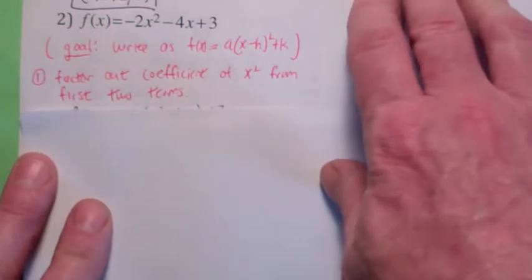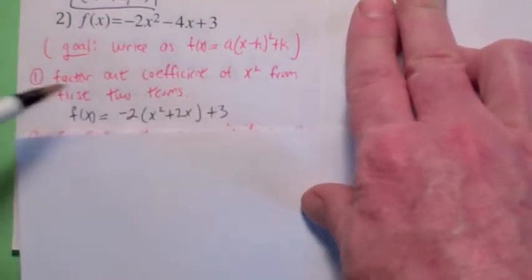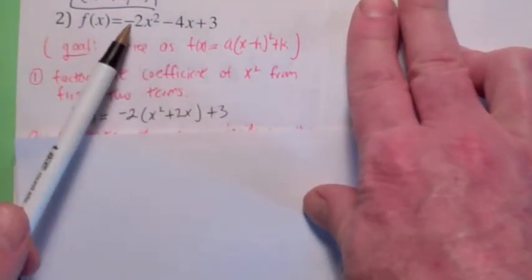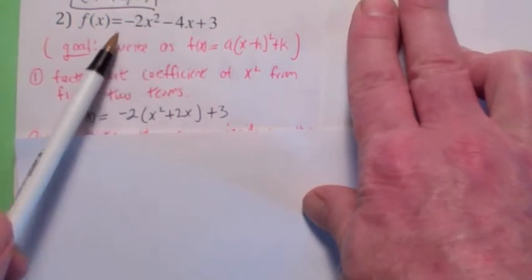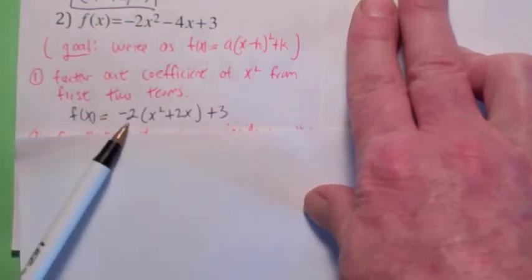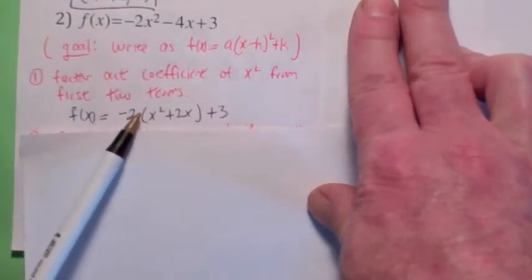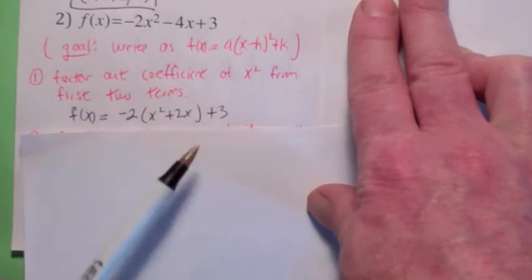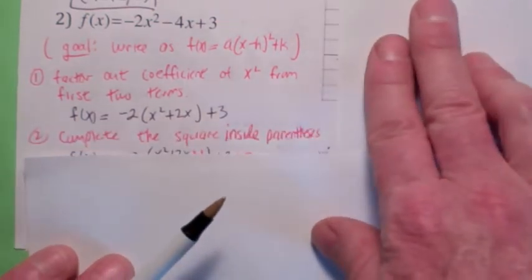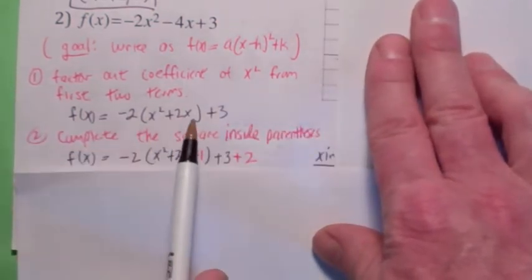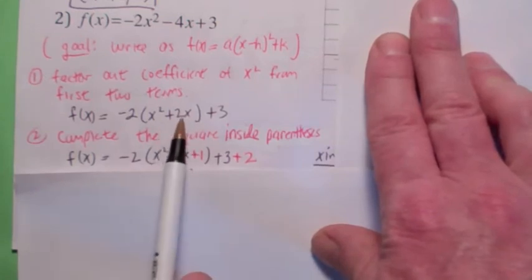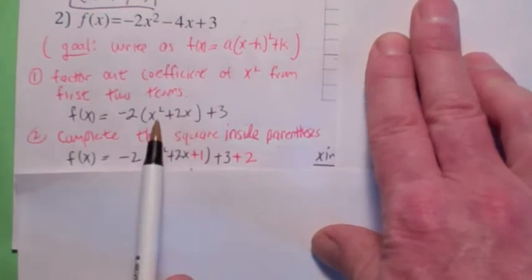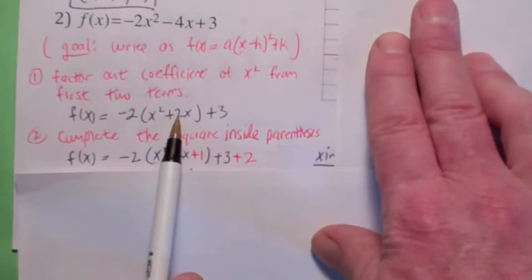The first thing we're going to do — this is the process that will work — we look at the first two terms and factor out the coefficient of x squared. So you factor out the negative 2 from the first two terms. Then inside the parentheses you complete the square. What's the magic number that makes this into a perfect square inside the parentheses? You take half the coefficient of x and square it — you get 1.